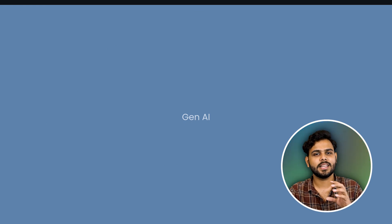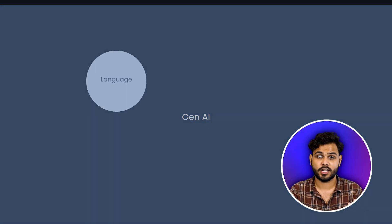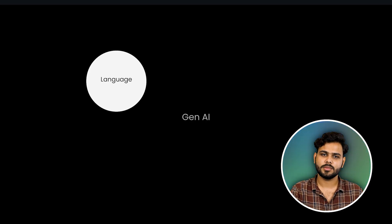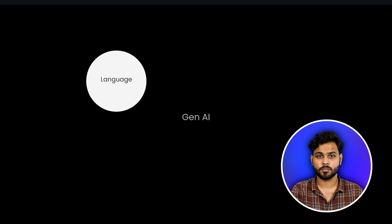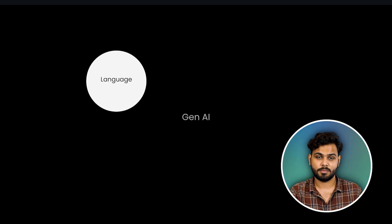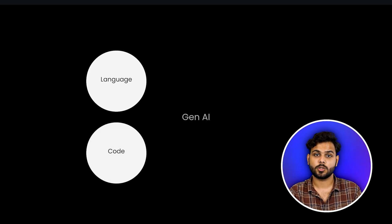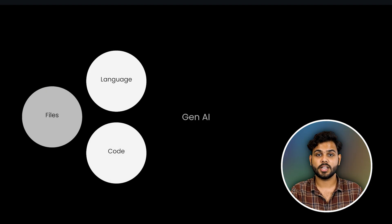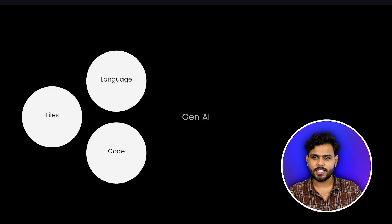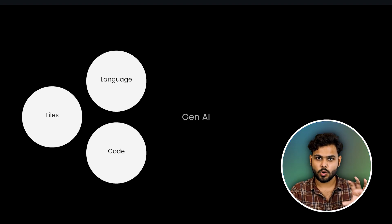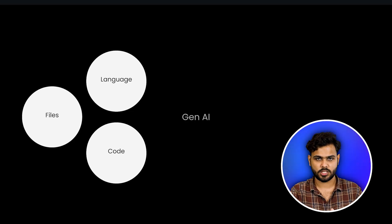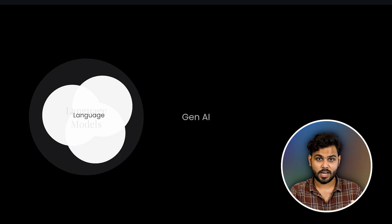Now let's see what exactly we have in Generative AI. In Generative AI, we have algorithms that can generate language — taking language as input and generating language as output. We call them LLMs, and we'll talk about that later. ChatGPT is an example of that. We also have algorithms that can generate code, and algorithms that can generate new files. All these things are working on text in some form, so they come under one single category that is textual in nature — we call them language models.